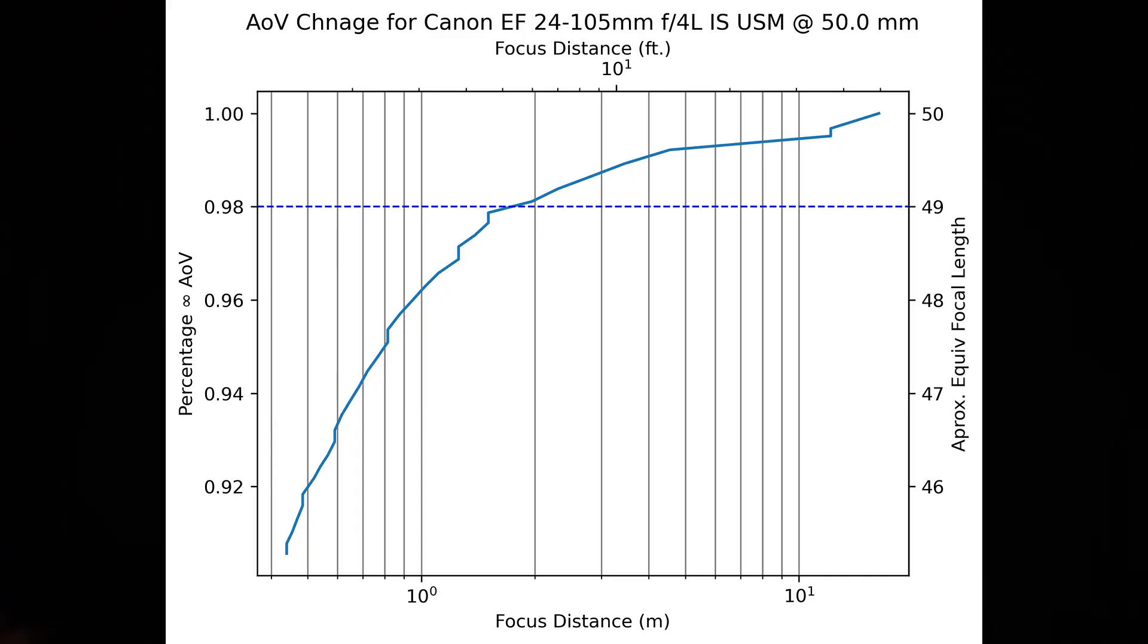Moving on to the 50mm position, and the lens is now breathing pretty significantly with a 9.5% wider total angle of view change. Now, additionally here, the 2% threshold has shifted to close to 6 feet or 2 meters away from the camera, which is starting to get into the range where it could be impactful.